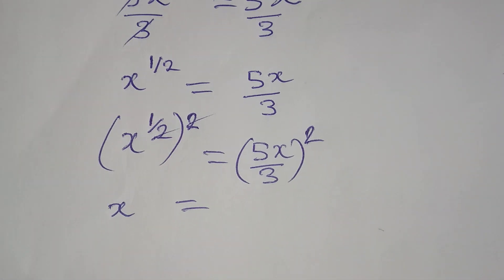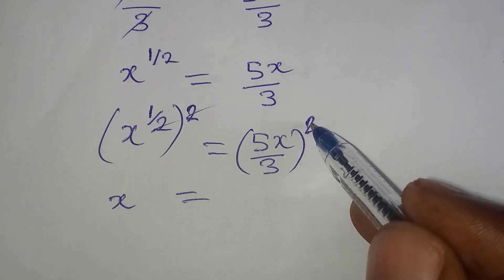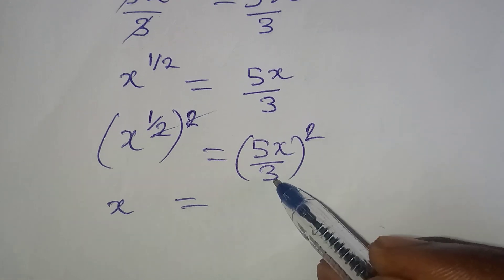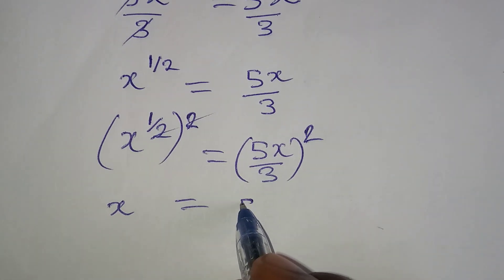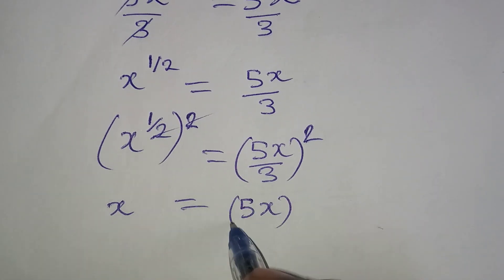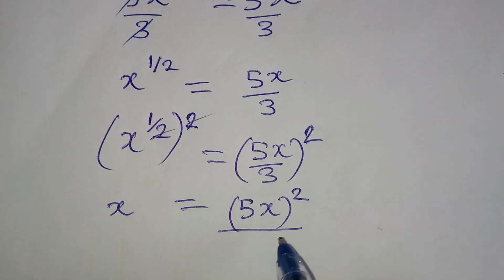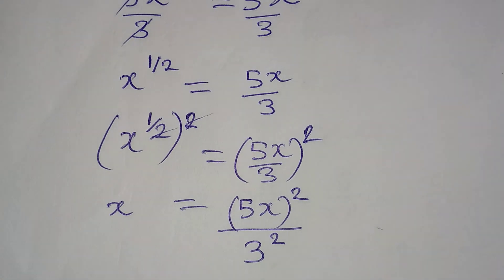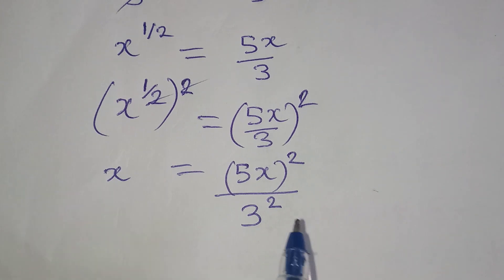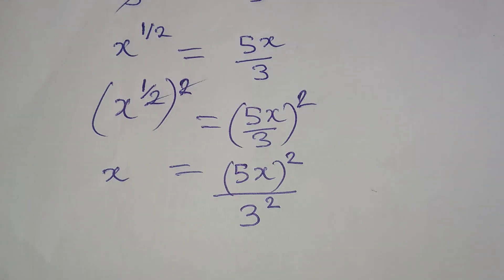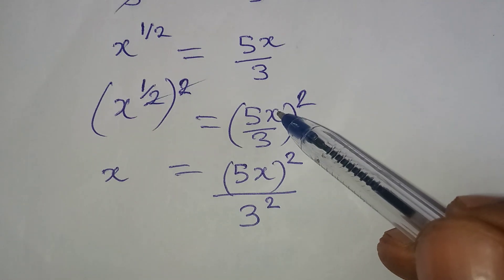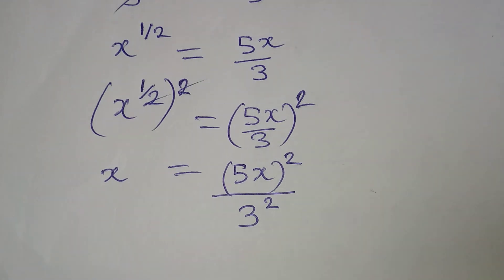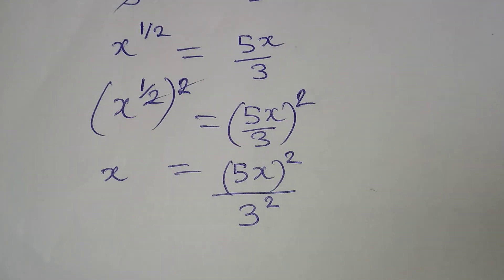Now if you have this, understand that this square is for both the numerator and the denominator. So we are going to have 5x squared all over 3 squared. And if I don't put this in brackets, I will be wrong because 5x is what is carrying the square, not x alone.